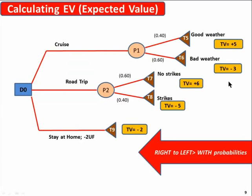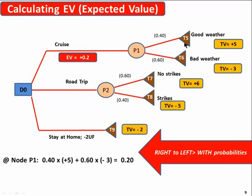Now we have to calculate the expected value. For that, we go from right to left. Let's start here. At P1, we have two probable outcomes. So the expected value at node P1 is 0.4 times five plus 0.6 times minus three. You can see a value of 0.2. So we put it here, expected value 0.2.